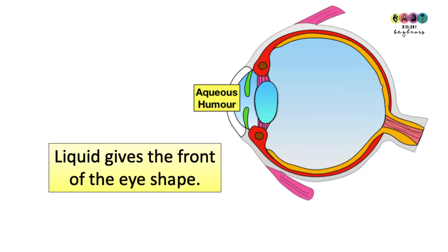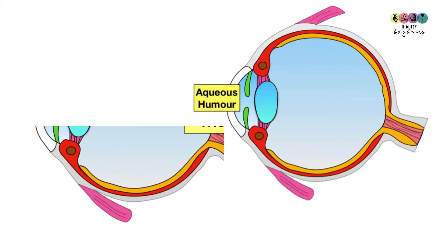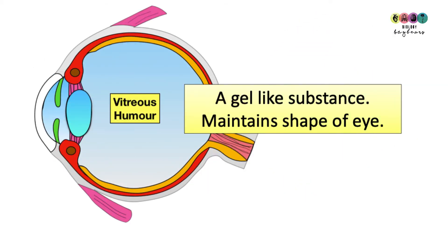To the front of the eye just inside the cornea is this liquid known as aqueous humour. It's this watery substance and it gives the front of the eye its shape. Behind the lens the eye is filled with this gel-like substance known as vitreous humour. It's thicker than aqueous humour and it's there to give the eye its shape, so it helps keep the eye in a particular spherical shape.